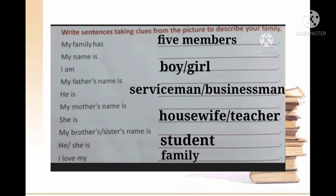Now look at your books. One picture is given there. We have to write down sentences taking clues from the picture to describe your family. Here you have to write about your own family. First: 'My family has blank members' — write down the number of members in your family. Next: 'My name is blank' — write your own name. Then: 'I am a boy' if you are a boy, or 'a girl' if you are a girl. Then: 'My father's name is blank' — write down the name of your father.